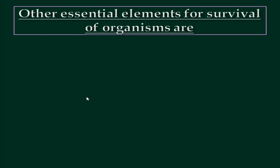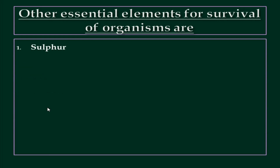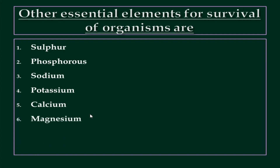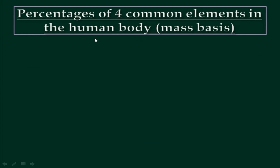Among the 25 elements, we discussed the four most common elements: Carbon, Hydrogen, Oxygen, and Nitrogen. The other essential elements for the survival of organisms are Sulfur, Phosphorus, Sodium, Potassium, Calcium, Magnesium, Iron, and Chlorine, along with several other elements.